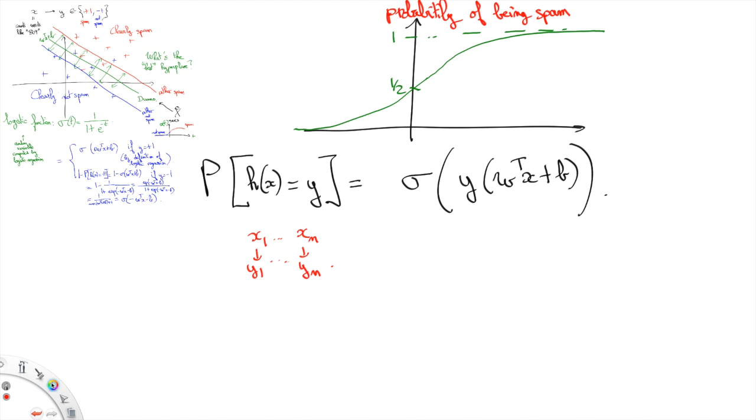So this measure, I'm going to call it a loss, is equal to minus the sum of the logarithm of sigma y_i w transpose x_i plus b.